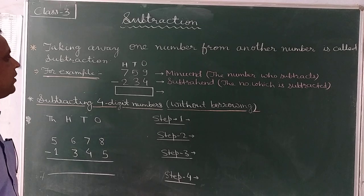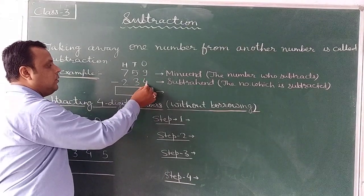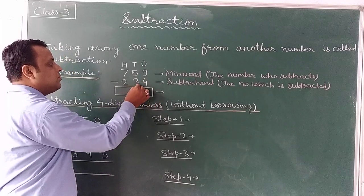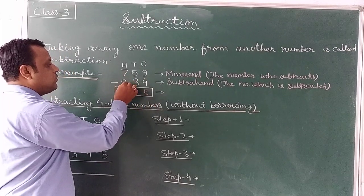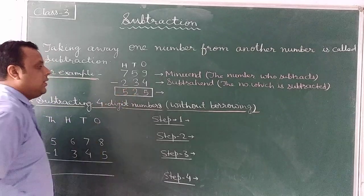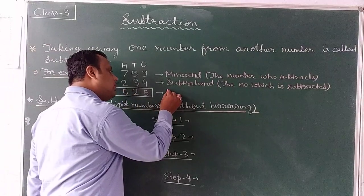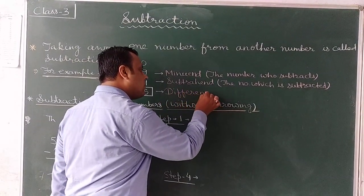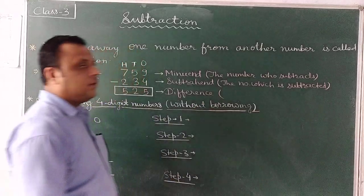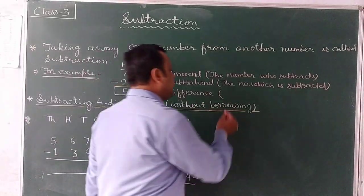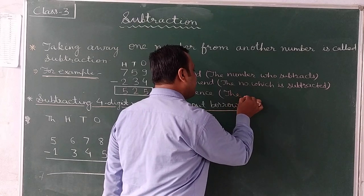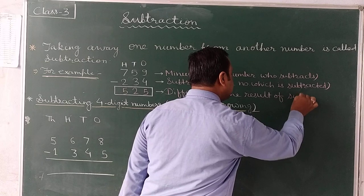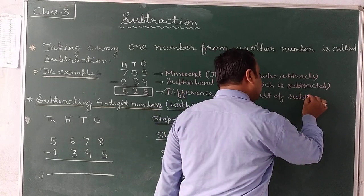Now we are going to subtract. 9 minus 4 is equal to 5. 5 minus 3 is equal to 2. 7 minus 2 is equal to 5. So the answer is 525. This result is called the difference — the difference is the result of subtraction.